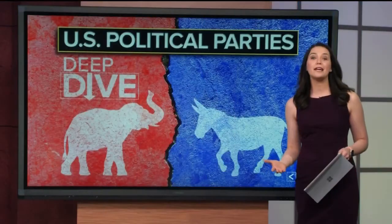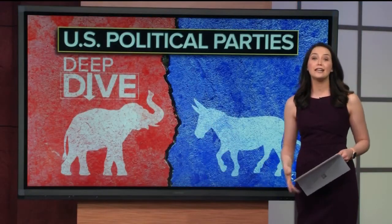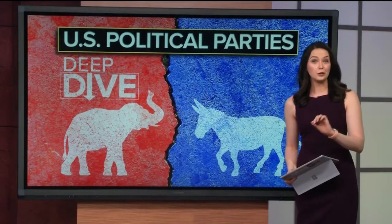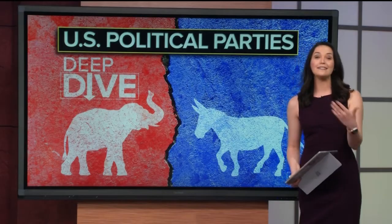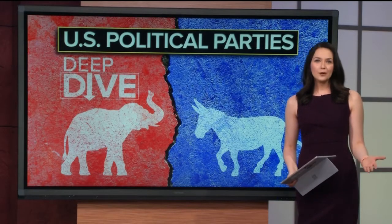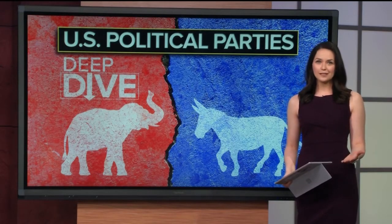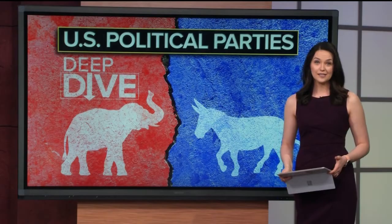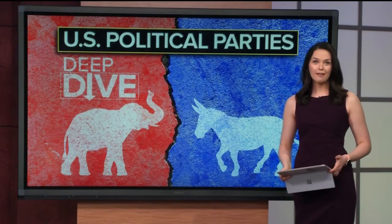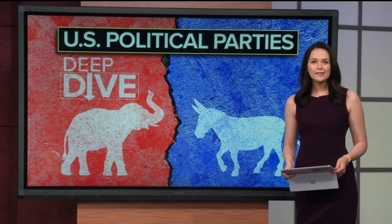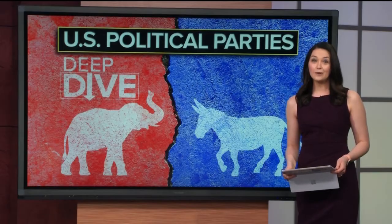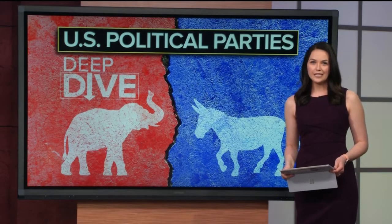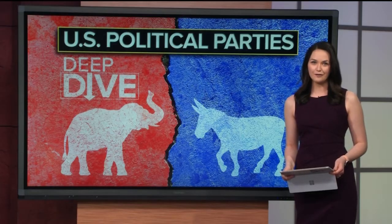Colorado is a state largely made up of unaffiliated voters who can participate in political primaries but not assemblies. But as Democrats and Republicans meet this weekend to ultimately decide who ends up on the primary ballot, we're taking a look at how the US ended up with the two major parties we have now and how it's shaped the politics of our country. Here's Newsy national political correspondent Alex Miller with a deep dive.